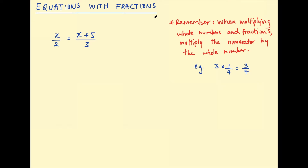In this video I'm going to be looking at equations with fractions, problems like this one here. I've got three examples to go through. A little note here: remember when multiplying whole numbers and fractions, multiply the numerator by the whole number. For example, three multiplied by a quarter is three quarters — three multiplied by one, not three multiplied by one and three multiplied by four. You can write the whole number as three over one and then you're doing three times one and one times four to get three quarters. If you're not sure about that, I would suggest going back to revise fractions before you go on to equations with fractions.